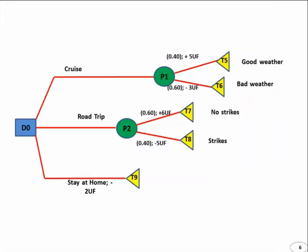Let's put this on a diagram. Here we have, as you can see, we put these alongside the paths. 40% probability for plus five units of fun. 60% probability minus three units of fun from good weather, bad weather respectively. And the same way for strikes and no strikes. And stay at home, we have minus two units of fun.